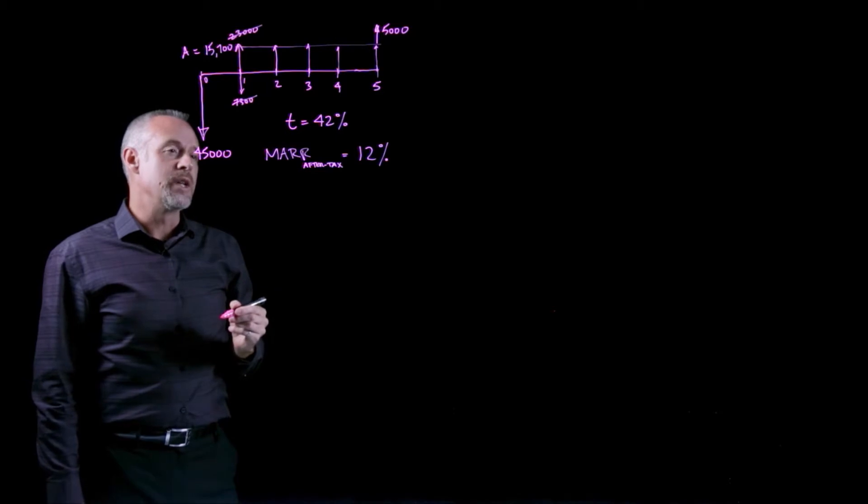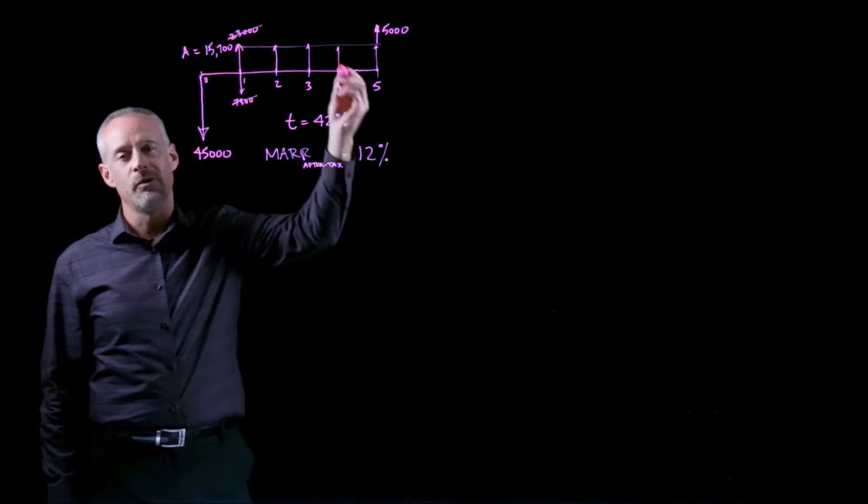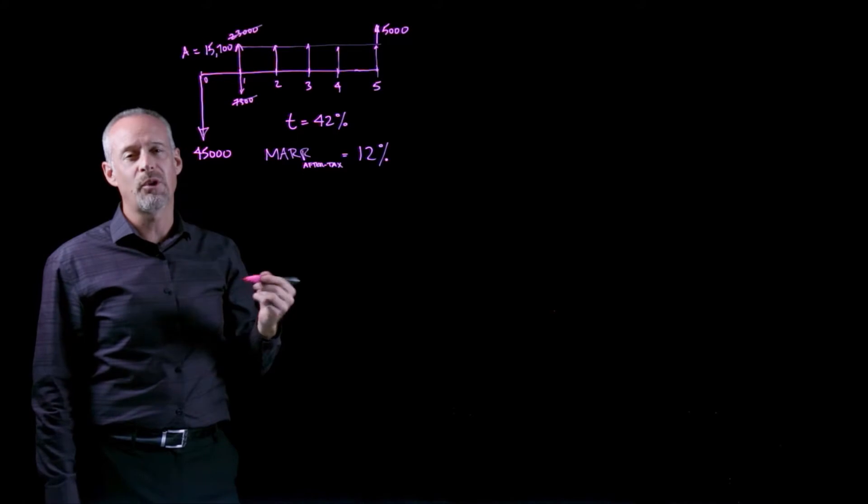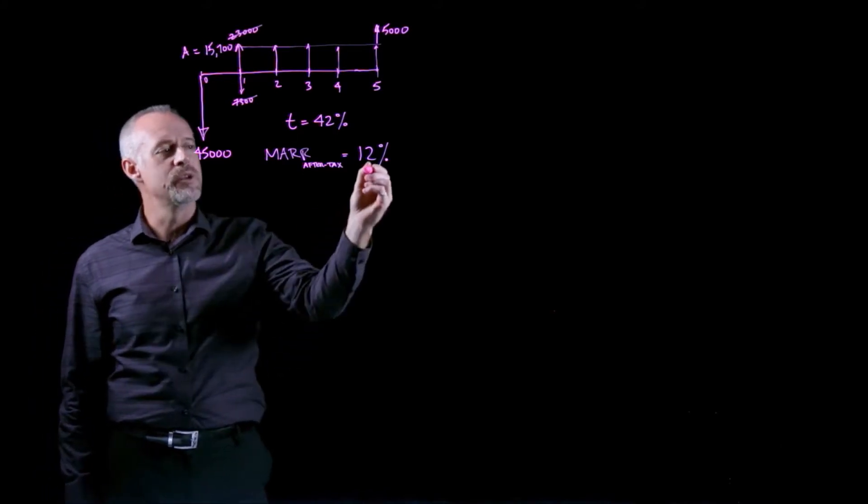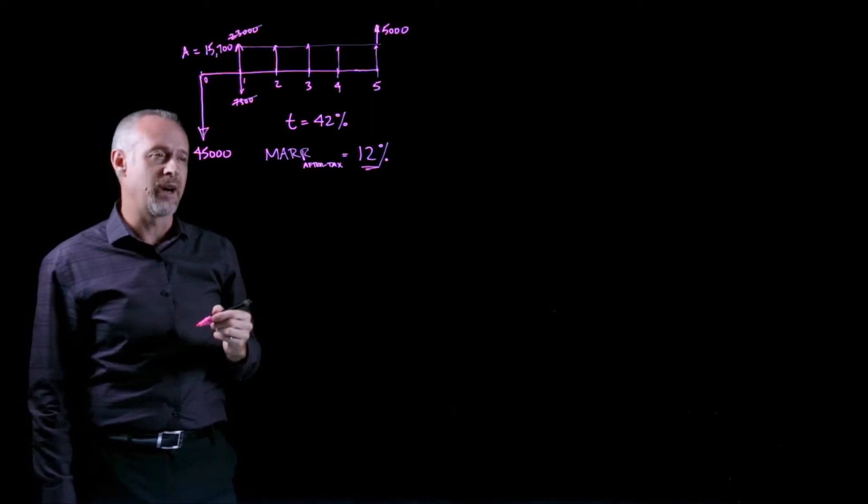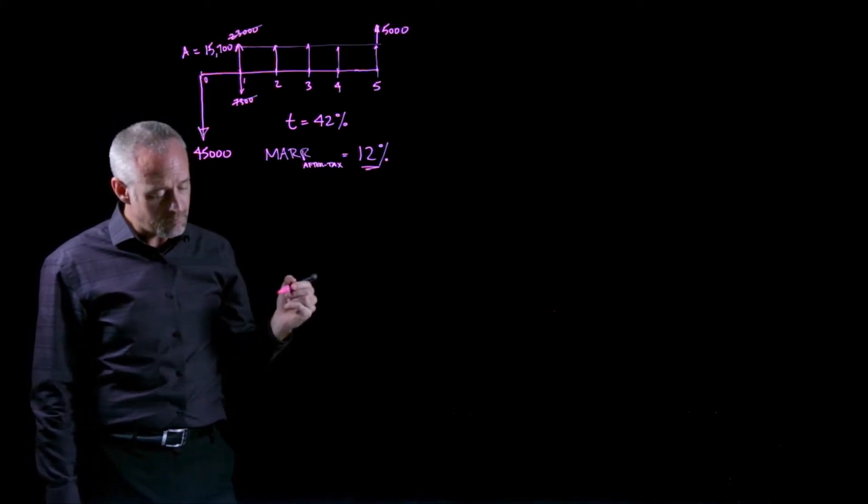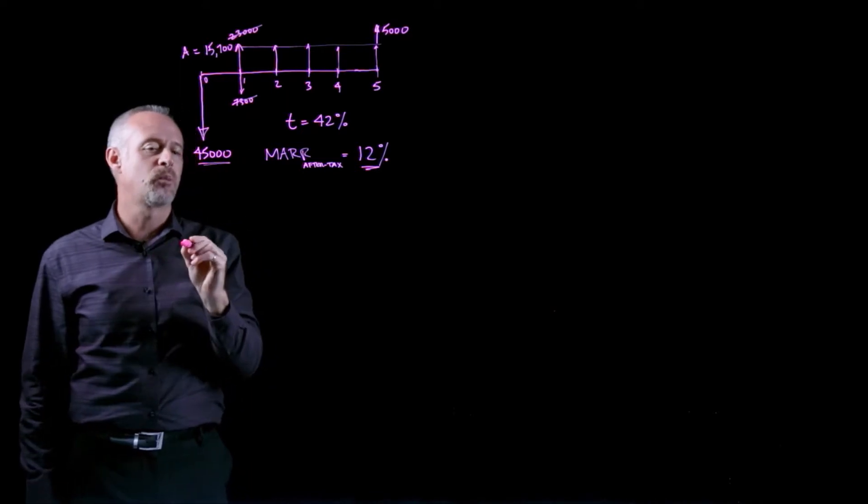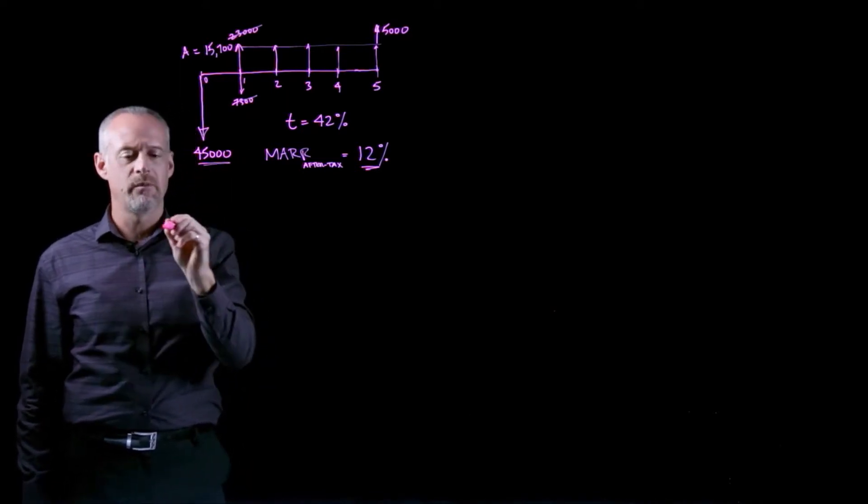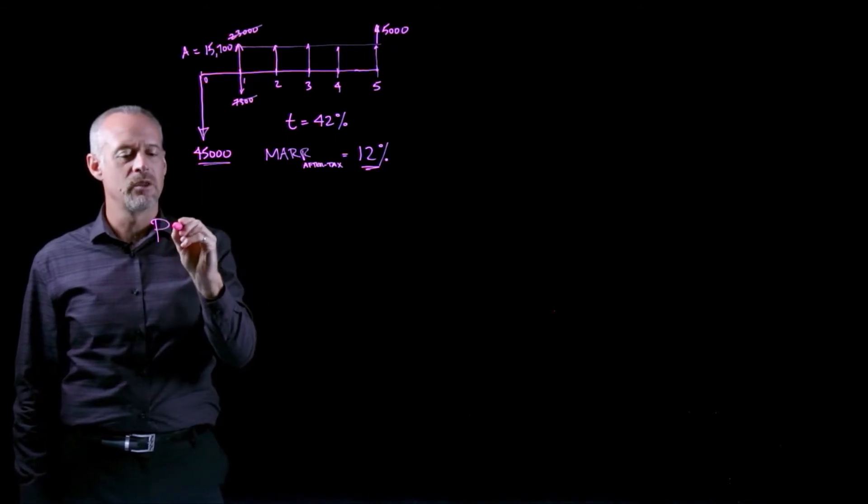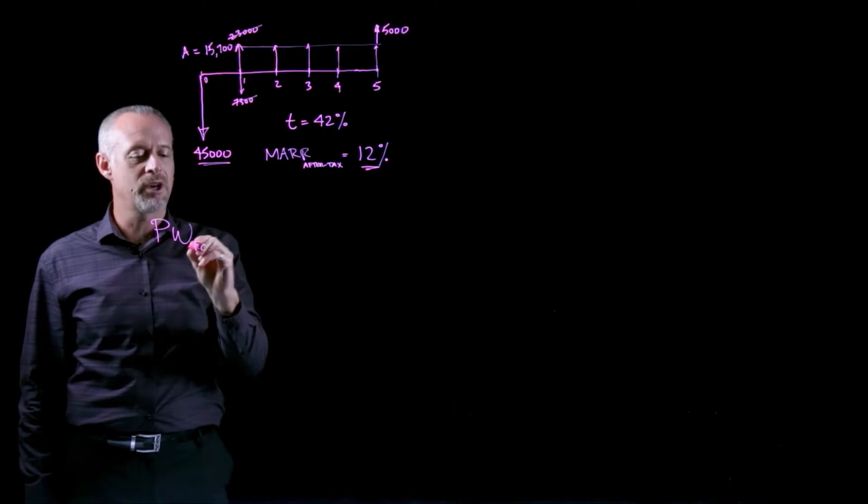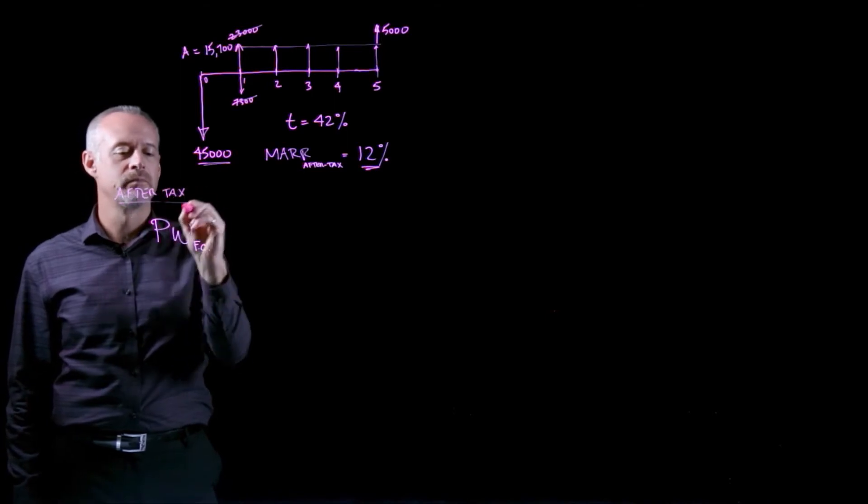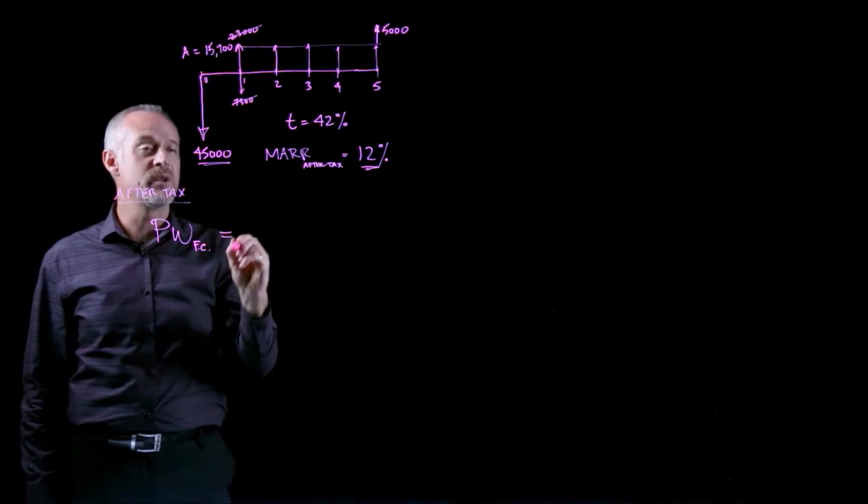So the first thing we're going to need to do is to convert this cash flow diagram into an after-tax cash flow diagram. Then we'll use a present worth method of analysis using a MAR of 12% to see if this is an attractive investment or not. So the first thing I'd like to do is calculate what is the after-tax present worth of the first cost.